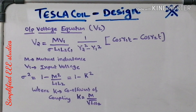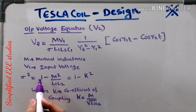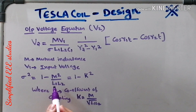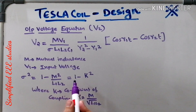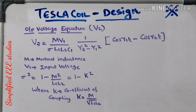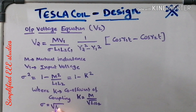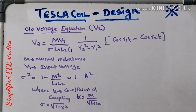If we substitute k into the sigma equation, sigma squared equals 1 minus (M divided by root of L1 L2) squared, which equals 1 minus k squared. Therefore, sigma equals the square root of 1 minus k squared. This is how you calculate sigma.